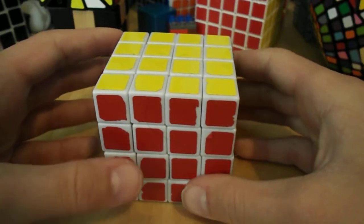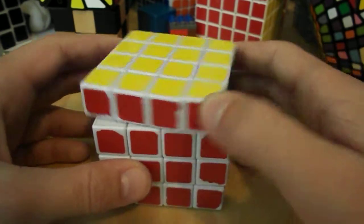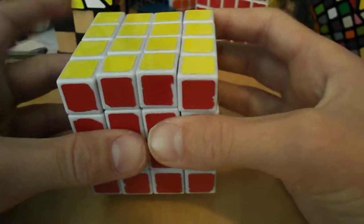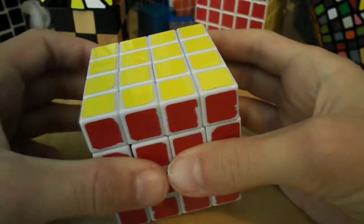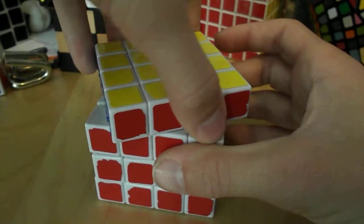Hello everyone, in this tutorial we will be taking apart and reassembling the QJ 4x4, and this has a similar mechanism to the Rubik's brand 4x4, I don't know what version, but it's the second or third version, so if you need that one, you might want to stay here.